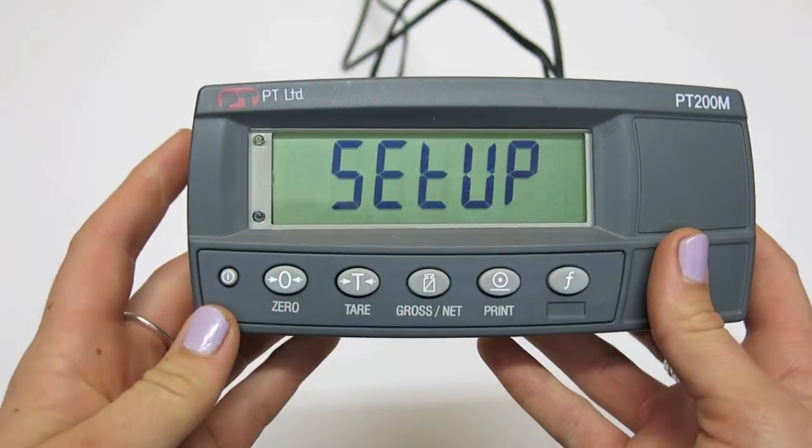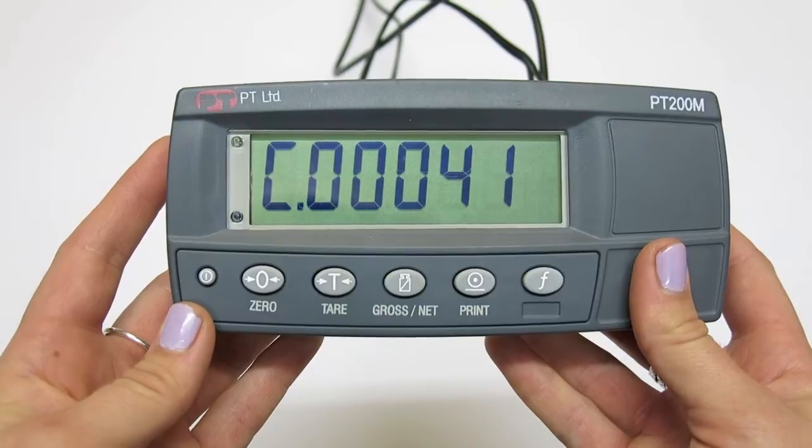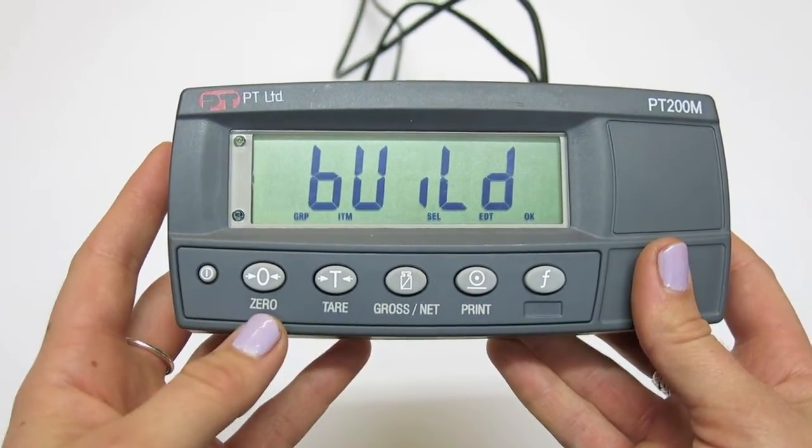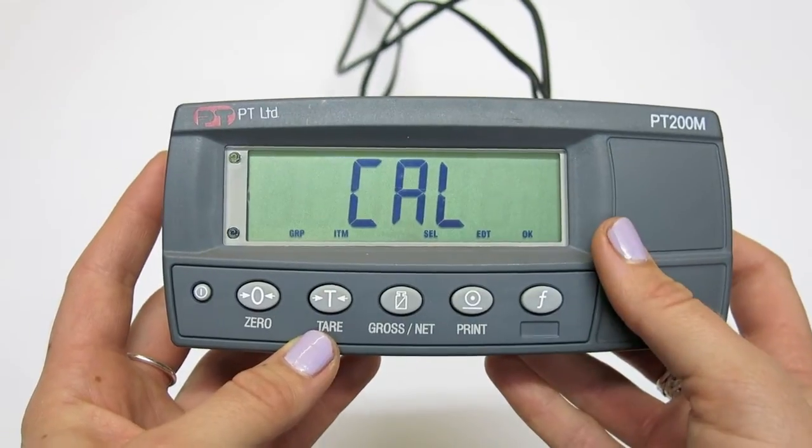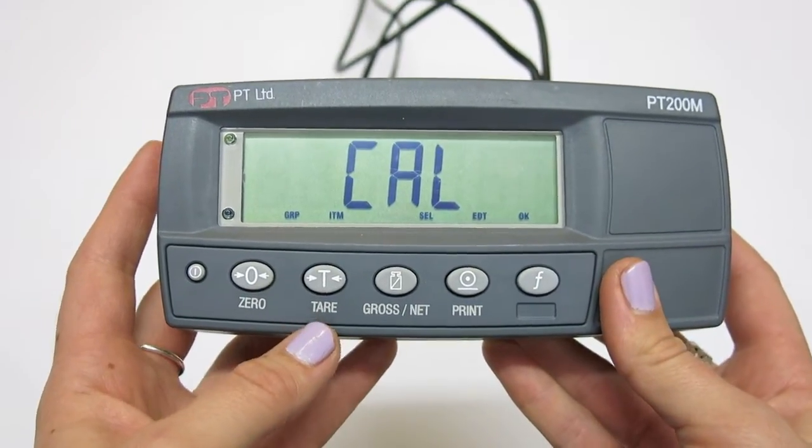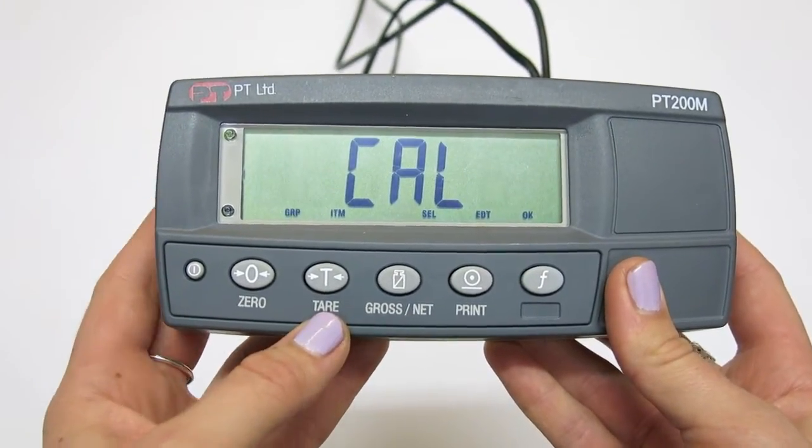This directs you to the full setup menu as shown. To navigate through this menu use the zero button. The calibration menu is the third on this list and you can use the tare button to scroll through this.